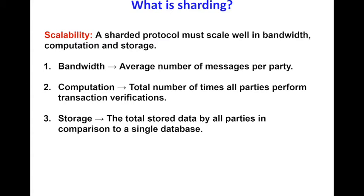Bandwidth expresses the average number of messages per party and is sometimes expressed through the communication complexity of the sub-protocols of the system. Computation is the total number of times all parties perform transaction verifications. To capture computational complexity, we assume the existence of a verification oracle that can verify a transaction in constant time. What we measure is how many times all parts of the system call the verification oracle. Storage is a very important and often neglected component of sharding. We calculate how much data the sum of all parties store, compared to a single blockchain where data is stored only once. For instance, in Bitcoin, storage is linear to the number of nodes since every node stores the entire blockchain. In a sharded protocol, we require that parties store less than the entire blockchain; otherwise, the system is not considered scalable.